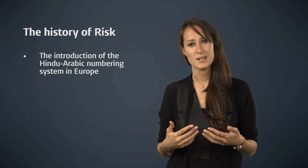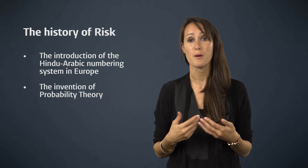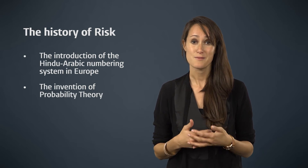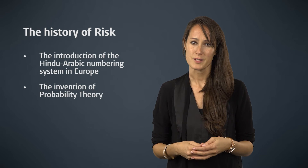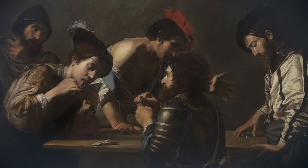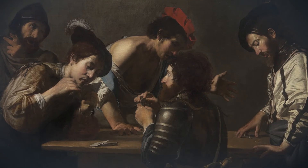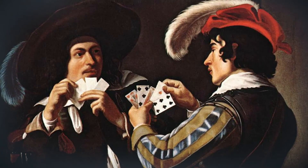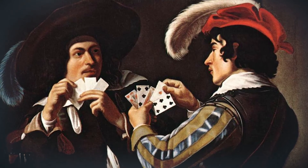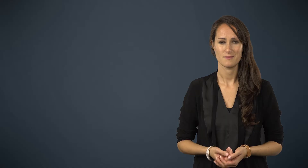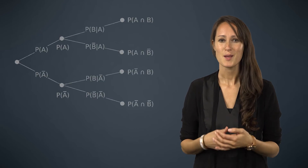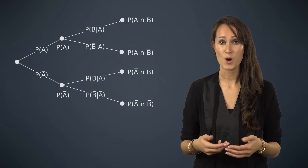The second related development was the invention of probability theory. Invented in the 17th century, probability theory was originally devised to deal with games of chance, for example in gambling. Here, it was used to mathematically calculate the odds of winning. The discovery of probability theory meant that people could, for the first time, make predictions and decisions with the help of numbers.